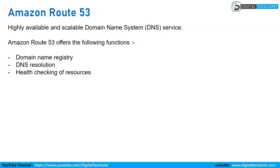Amazon Route 53 is a highly available and scalable Domain Name System where you can define your domain name, do domain forwarding requests, and also do health checks of your resources.